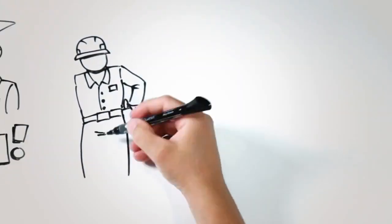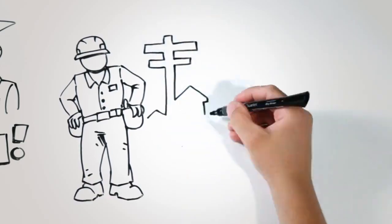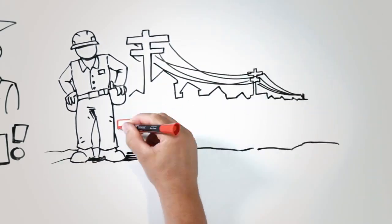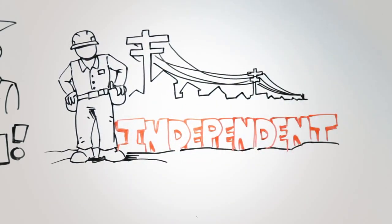Cooperatives stand on their own two legs. Decisions are made locally for local people. We call that principle autonomy and independence.